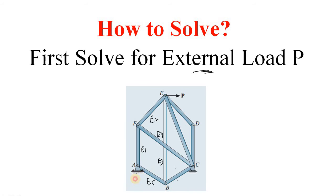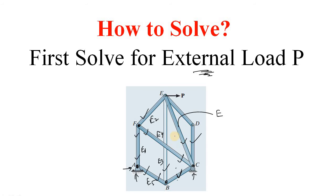Due to the external load, you first find the reactions, then consider any joint starting from A. Since Va and Ha are known at A, you can find the forces in AF and AB. At the next joint, those are known, so you can find the next members. At joint C, the adjacent forces are known, so you can find the force in the remaining member too. This way, you find all forces due to the external load, denoted E1, E2, E3... For example, in member EC, the axial force due to external load is E5.